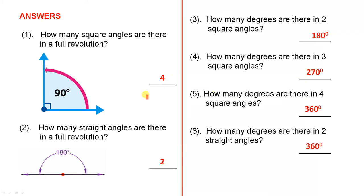90 plus 90 plus 90 plus 90. How many straight angles are there in a full revolution? There are two of them because one of them is 180, and you do another 180. That gives you the full revolution. So the answer is two.